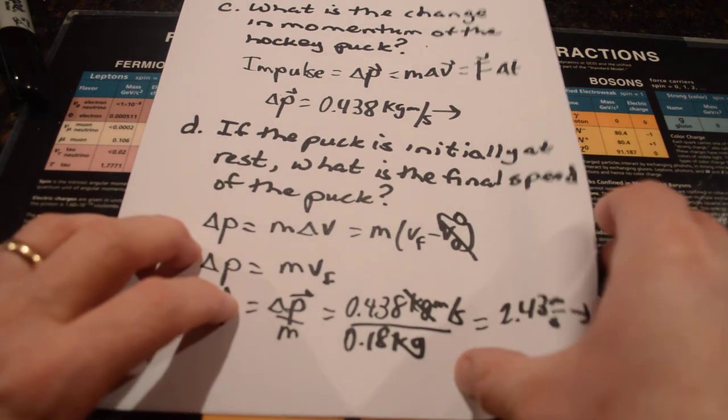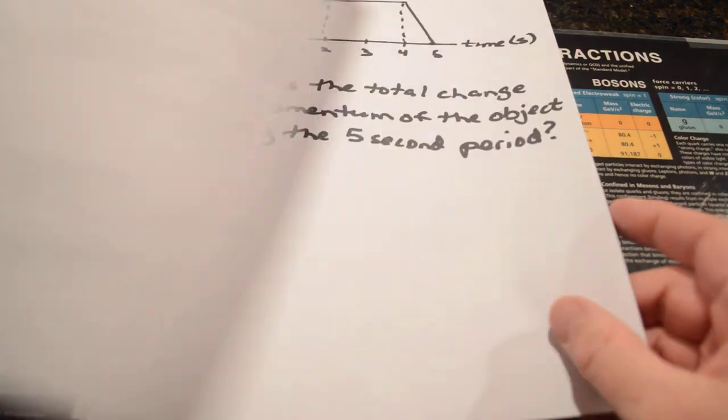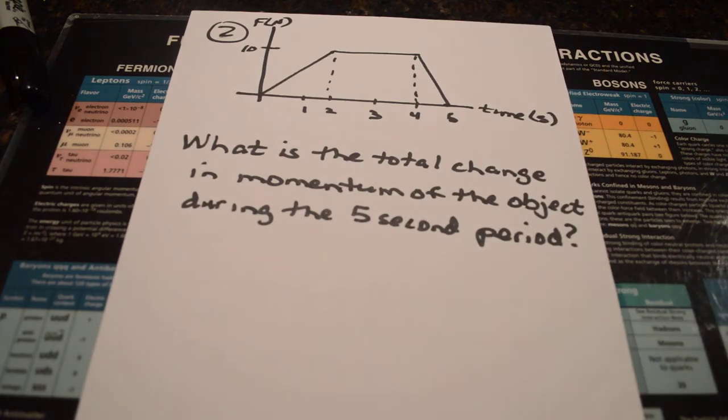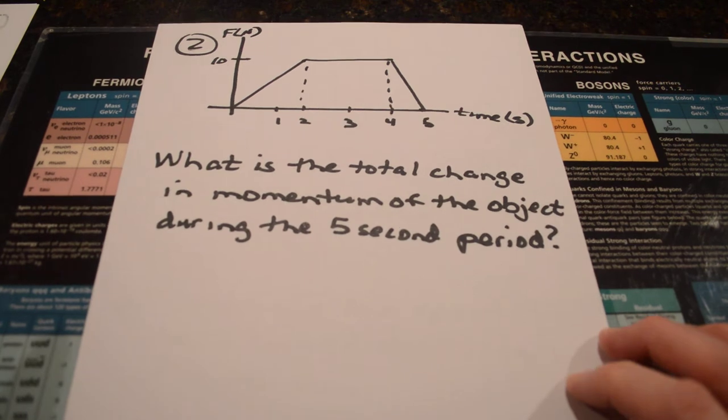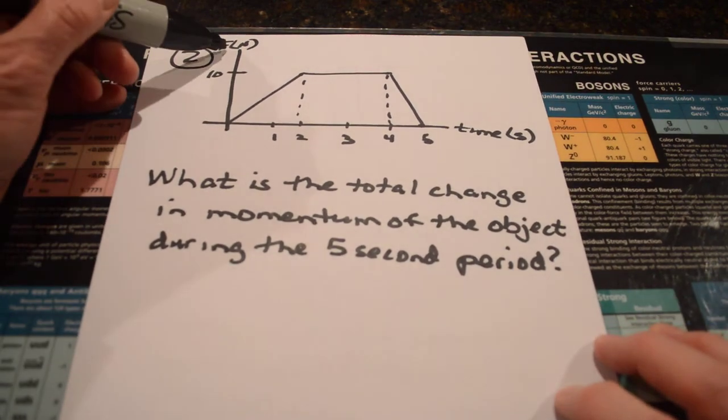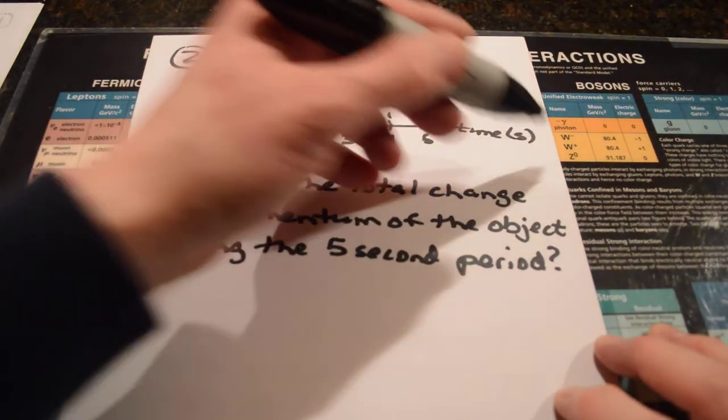Let's go on to the next situation. This is more of a graphical problem. It says, what is the total change in momentum of the object during the five-second period? Notice in this case, they're graphing force in newtons versus time in seconds.